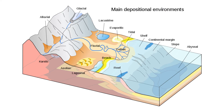Raindrop impressions, mud cracks, ripples, cross beds, graded beds — all of these sedimentary structures are good indicators of depositional environments. The discovery of a sedimentary structure can provide a powerful clue about the environment in which the rock formed, whether it be a beach, a river, a lake, or any other setting where sediment is deposited and eventually turns into rock.